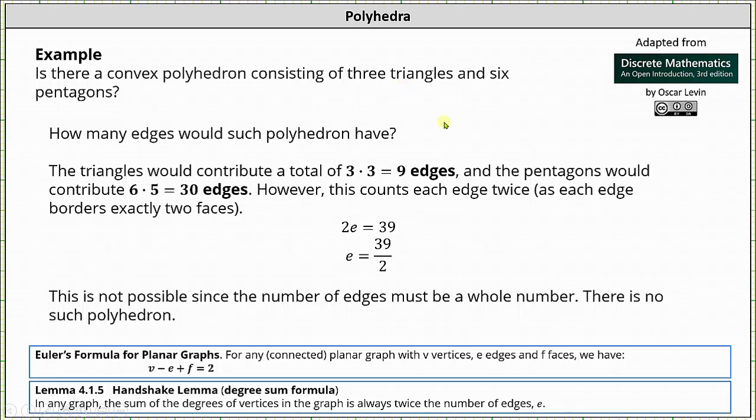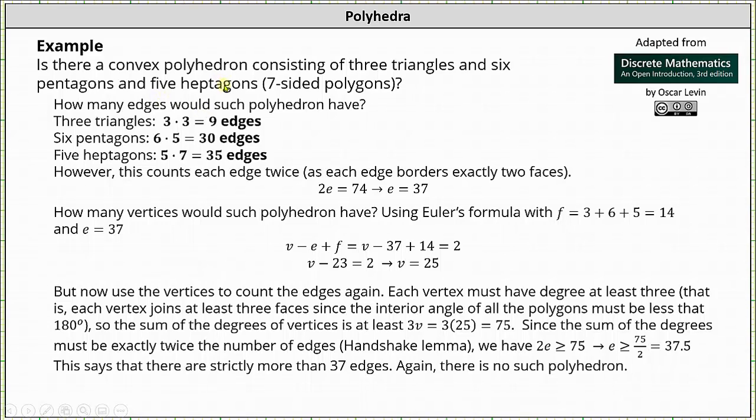And now let's consider a more involved example. Is there a convex polyhedron with 3 triangles, 6 pentagons, and 5 heptagons? A heptagon is a 7-sided polygon. How many edges would such polyhedron have? Well, 3 triangles gives us 3 × 3 = 9 edges, 6 pentagons gives us 6 × 5 = 30 edges, and 5 heptagons gives us 5 × 7 = 35 edges. However, this counts each edge twice. To find the number of edges, we set 2e = 74, where 74 is the sum of 9, 30, and 35. Dividing both sides by 2, we have the number of edges equals 37.